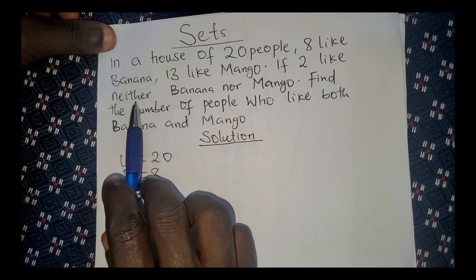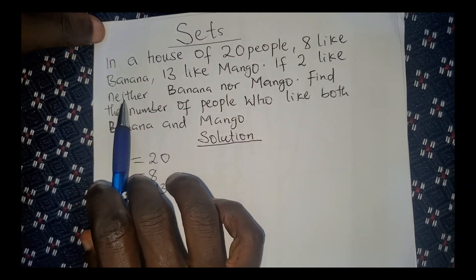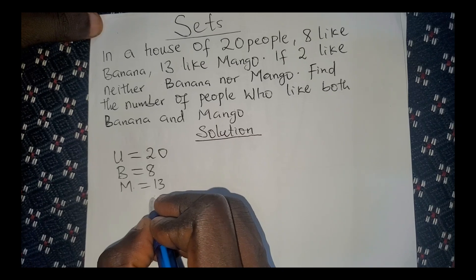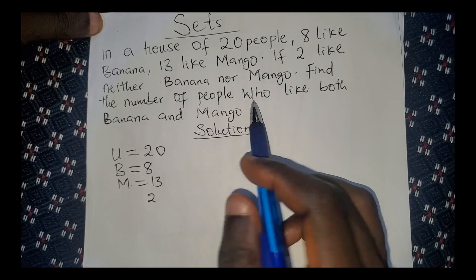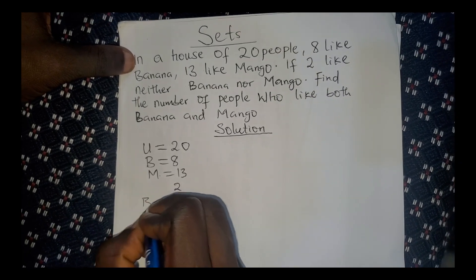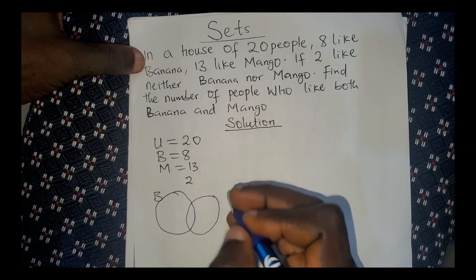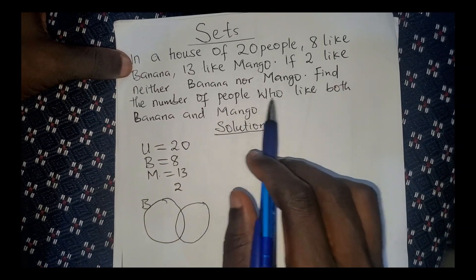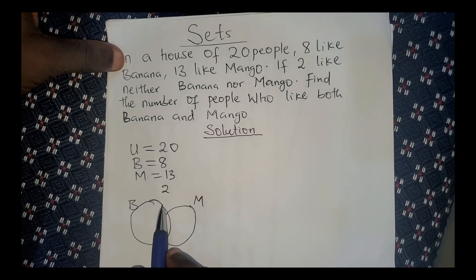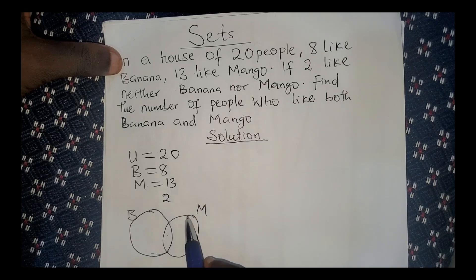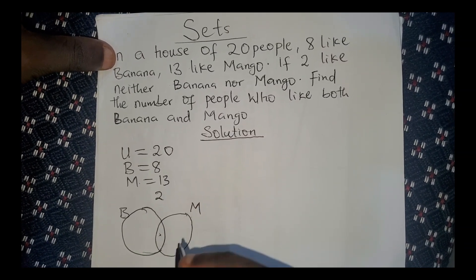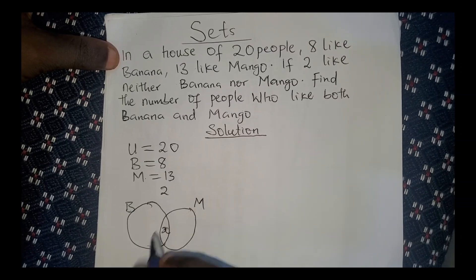Two people like neither banana nor mango — they don't like banana, they don't like mango — so we just write that as 2. We have to find the number of people that like both banana and mango. Let's draw our Venn diagram: this circle is for banana, and this one is for mango. The people that like both banana and mango will be in the intersection here, because that region is part of both banana and mango. We are not given this value, so let's represent it as x.